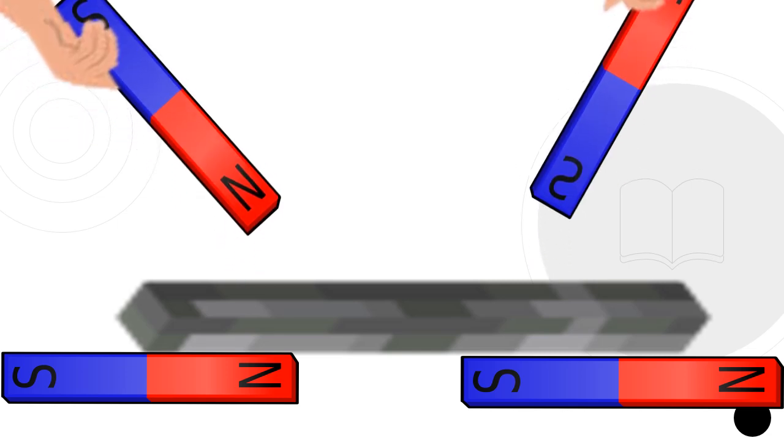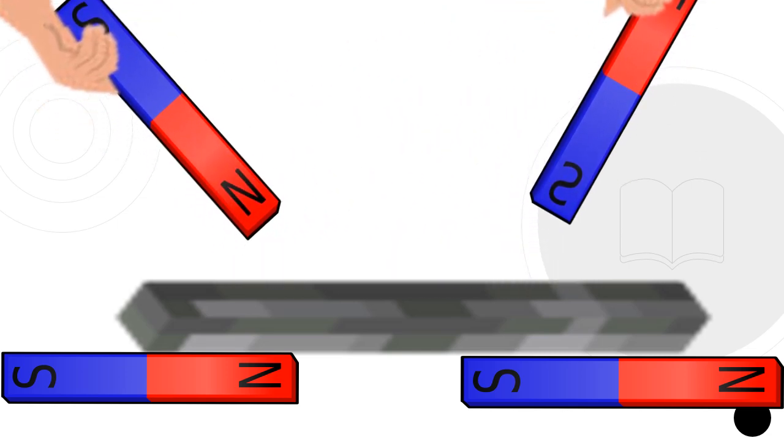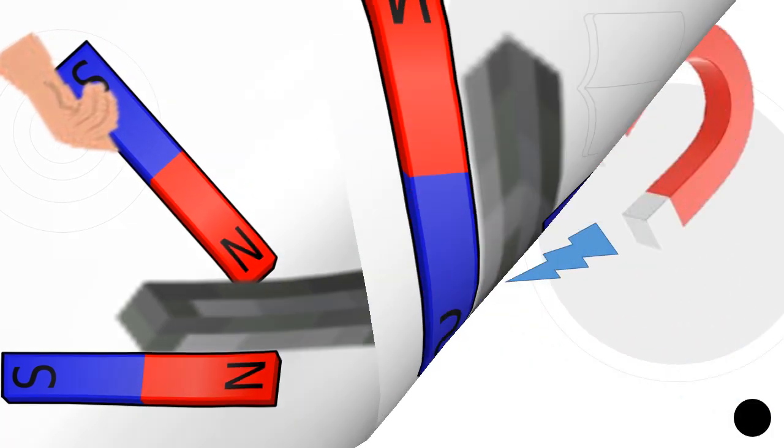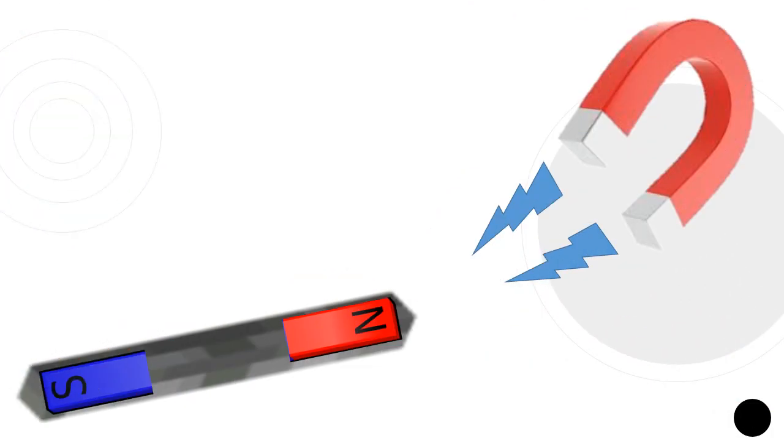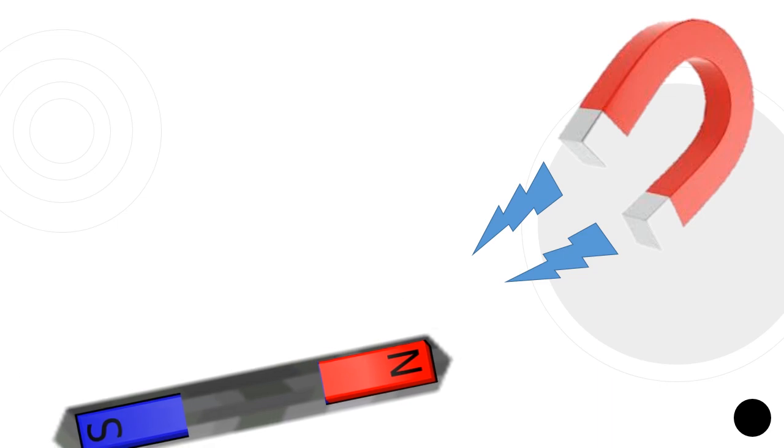The material with unlike poles closest to the magnet becomes locally magnetized when a magnet is brought close to a previously unmagnetized ferromagnetic material. Unmagnetized iron is drawn to a magnet as a result of the resulting attractive force.